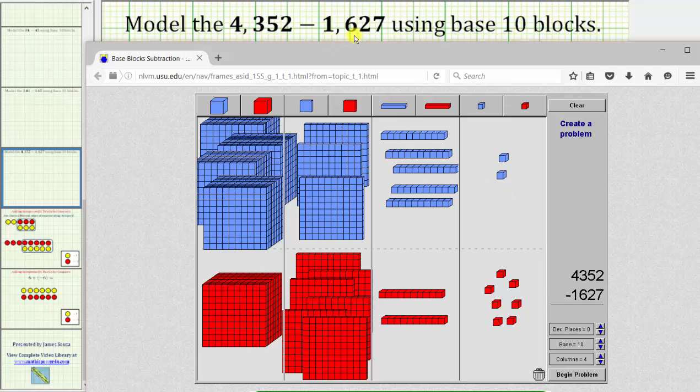Then we model 1,627 using the red base 10 blocks. For 1,627, we have one cube for 1,000, six flats for 600, two rods for 20, and seven units for seven.